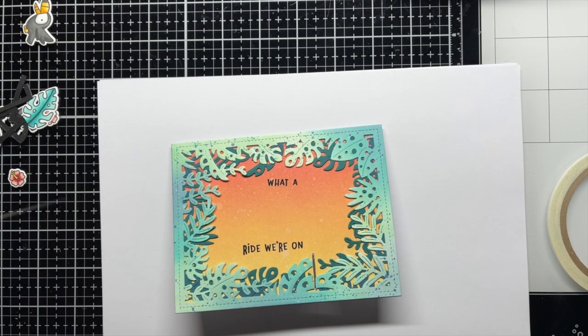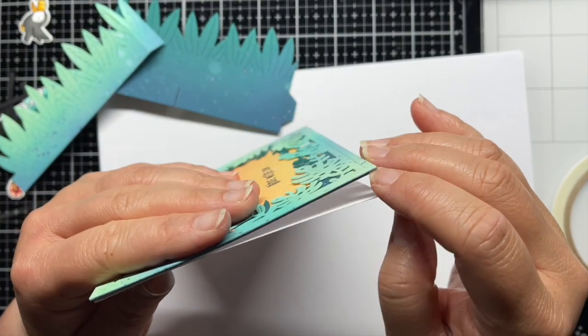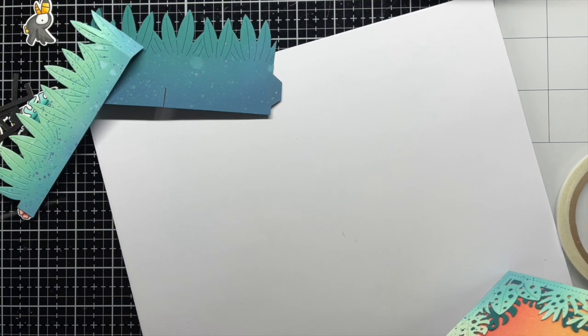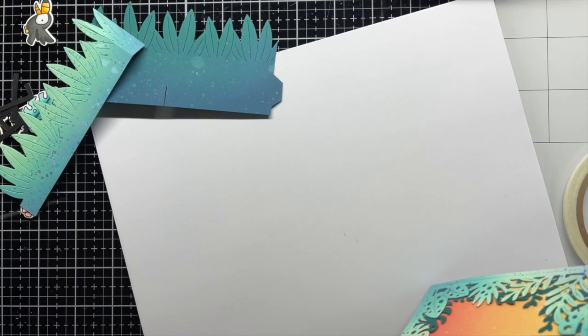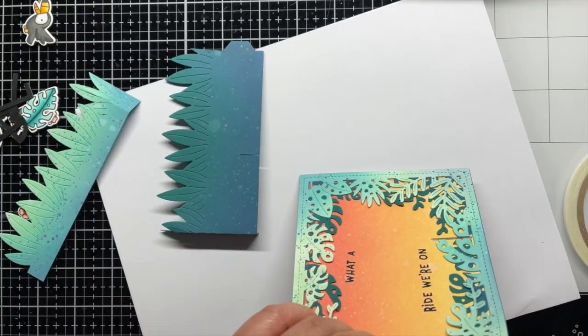After adhering the card base to the panel I realized I was supposed to adhere my tabbed bendy panels first. Luckily I was able to carefully peel back the card base and sneak in the bendy panels. But yes, definitely attach the bendy panels to the background panel first and then adhere that to the card base.